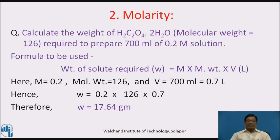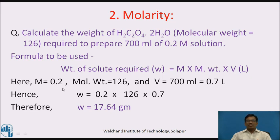Next numerical: Calculate the weight of oxalic acid (molecular weight 126) required to prepare 700 ml of 0.2 molar solution. Formula: W = molarity × molecular weight × volume in liters. Given: molarity = 0.2, molecular weight = 126, volume = 700 ml = 0.7 liters. Putting all values: W = 0.2 × 126 × 0.7 = 17.64 grams.